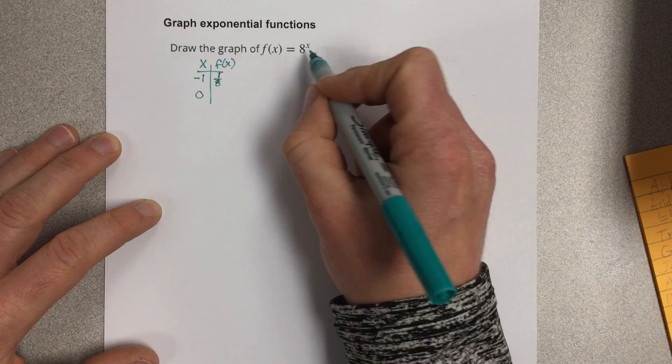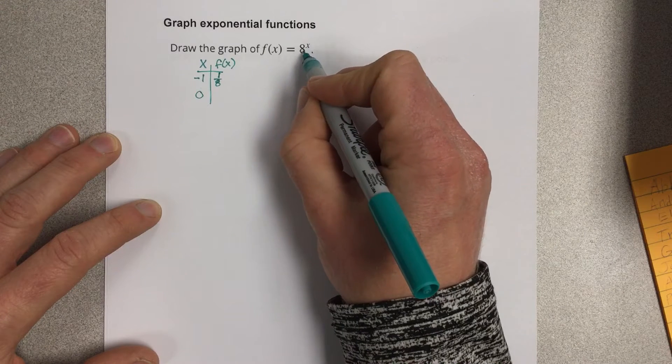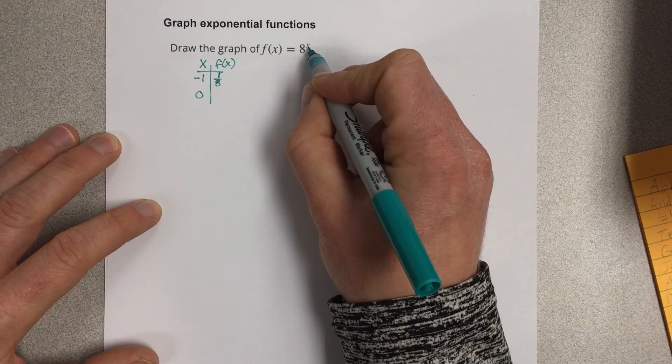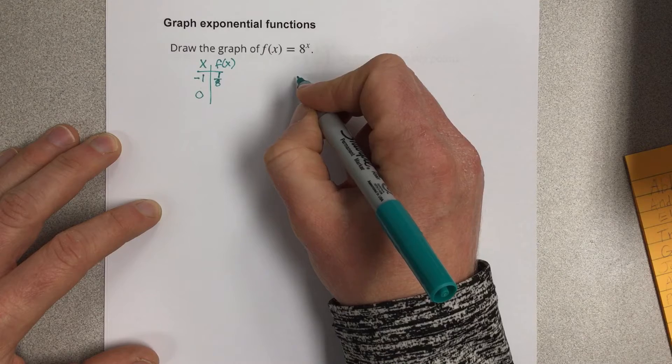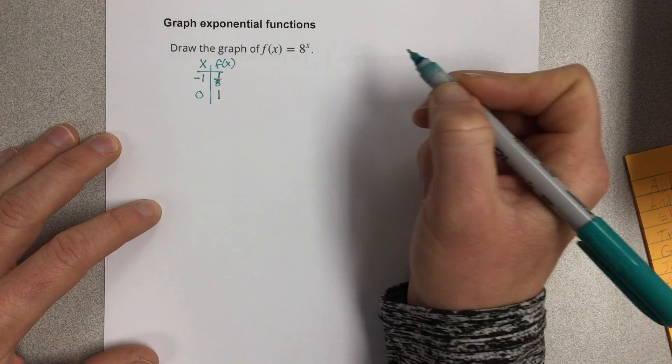If I plug in 0, that would be 8 to the 0 power. 8 to the 0 power would be just 1. So I have 0, then 1.